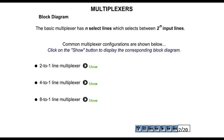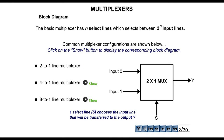There are two to the n input lines and n selection lines whose bit combinations determine which input is selected. Here, n is the number of selection lines. So for a 2-to-1 line multiplexer, there is one selection line, two input lines, and only one output line. The internal circuit of this multiplexer is as follows.